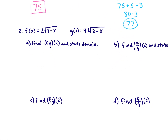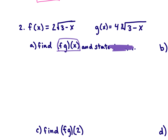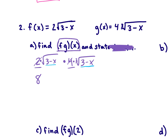Let's look at number 2. We're finding f times g — we can ignore the domain. So we're multiplying: 2 times the square root of (3 minus x), times 4 times the cubed root of (3 minus x). All of these are being multiplied together. We can combine the 2 and 4 to get 8 out front. For the radicals, even though they have the same base inside, one is a square root and one is a cubed root, so we can't combine them directly.